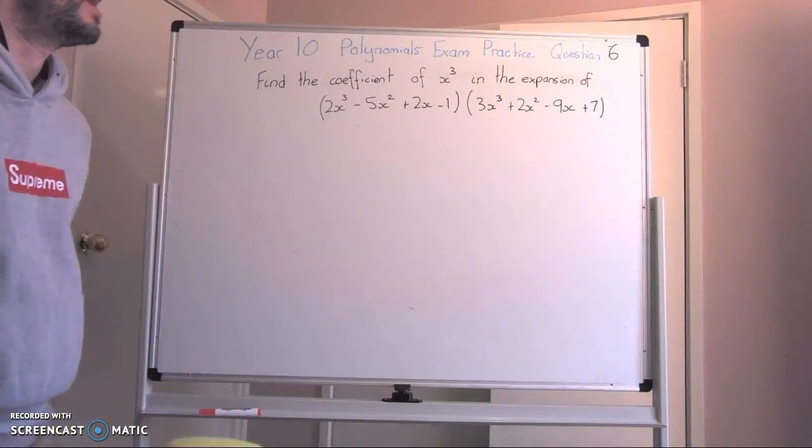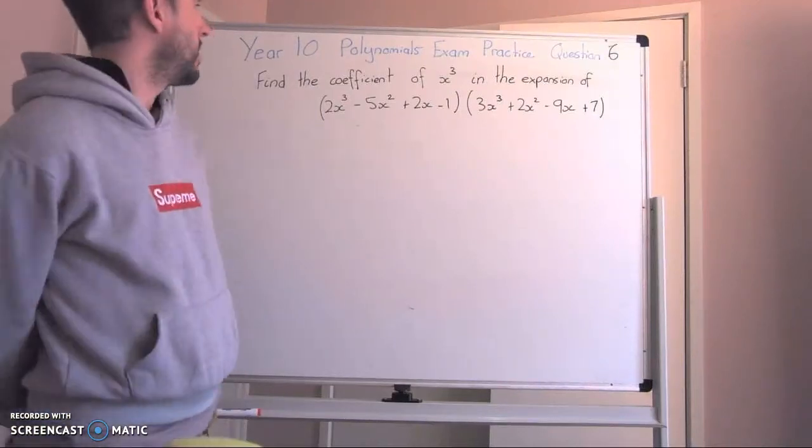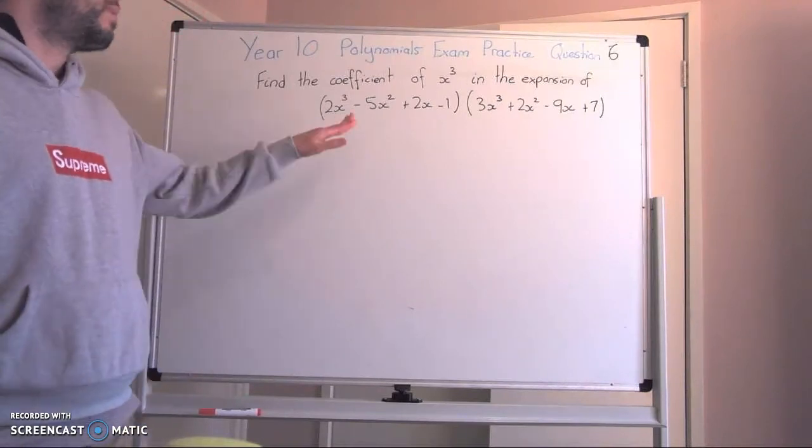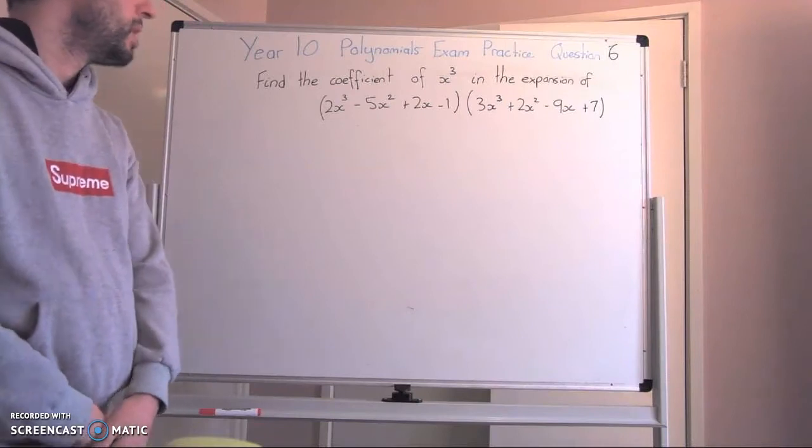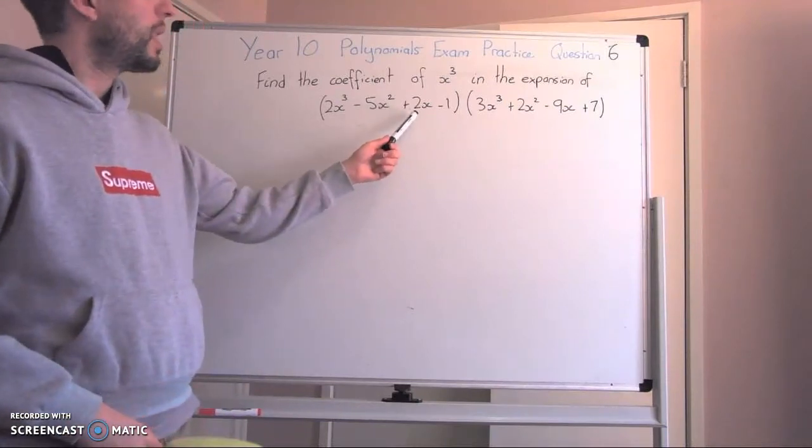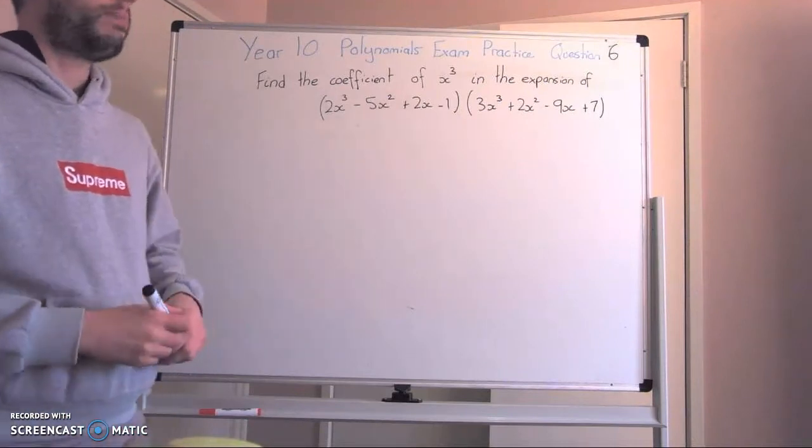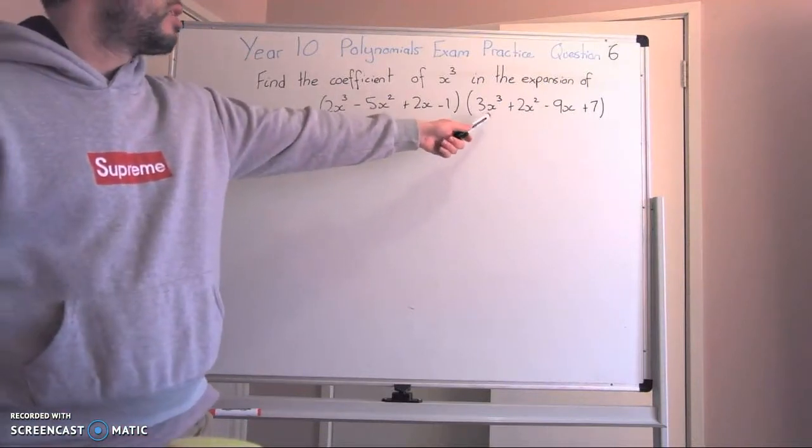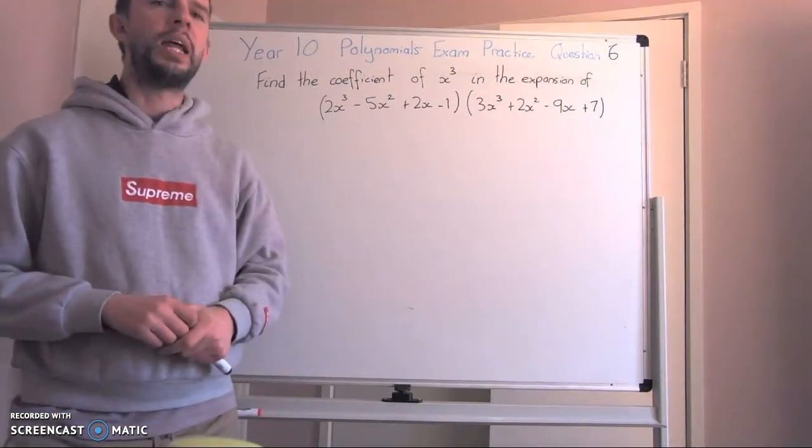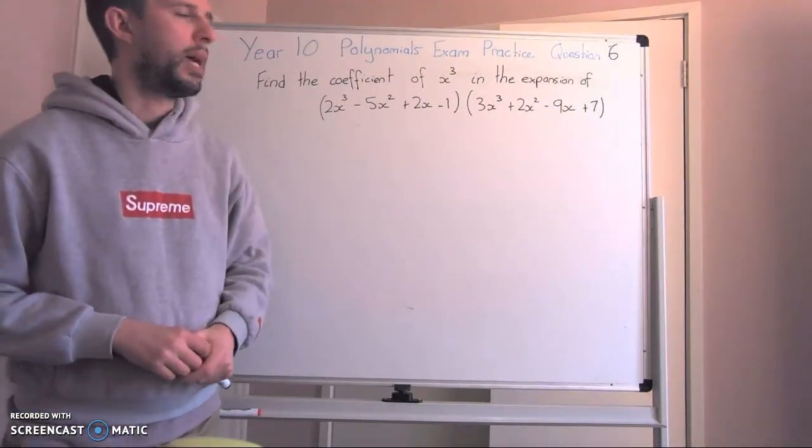Year 10 polynomials exam practice question 6. Find the coefficient of x³ in the expansion of (2x³ - 5x² + 2x - 1)(3x³ + 2x² - 9x + 7).